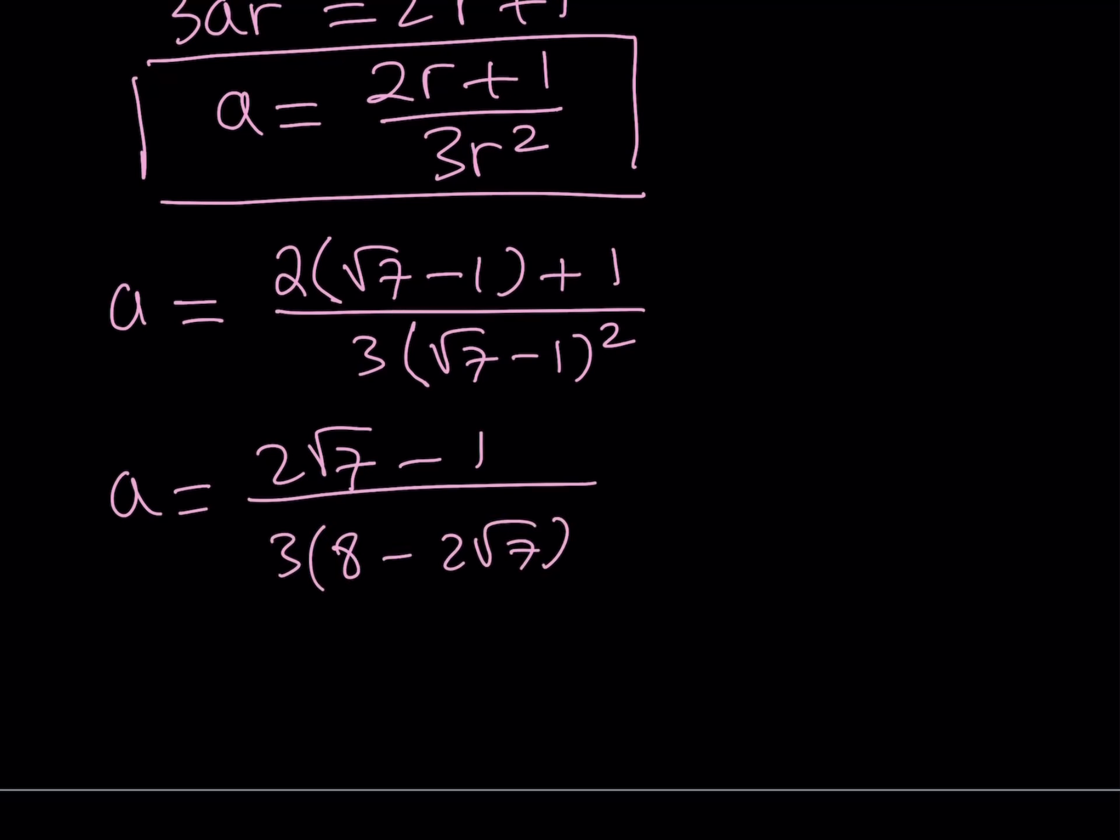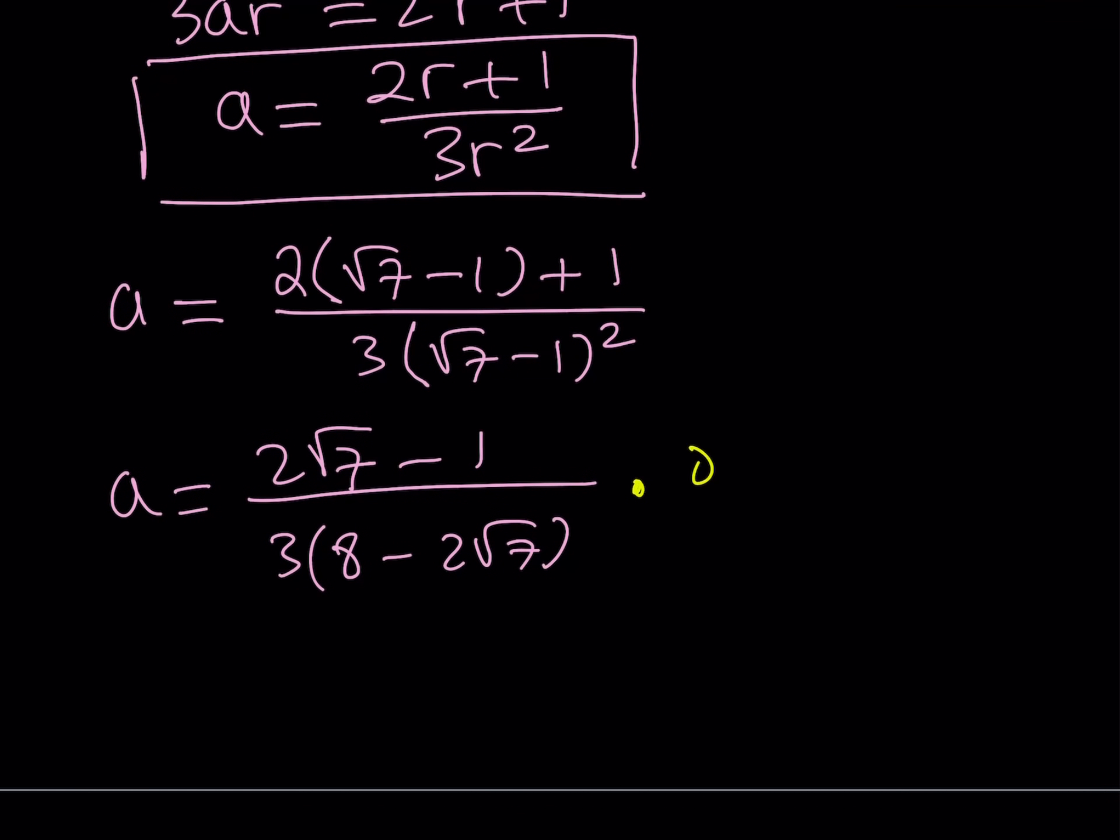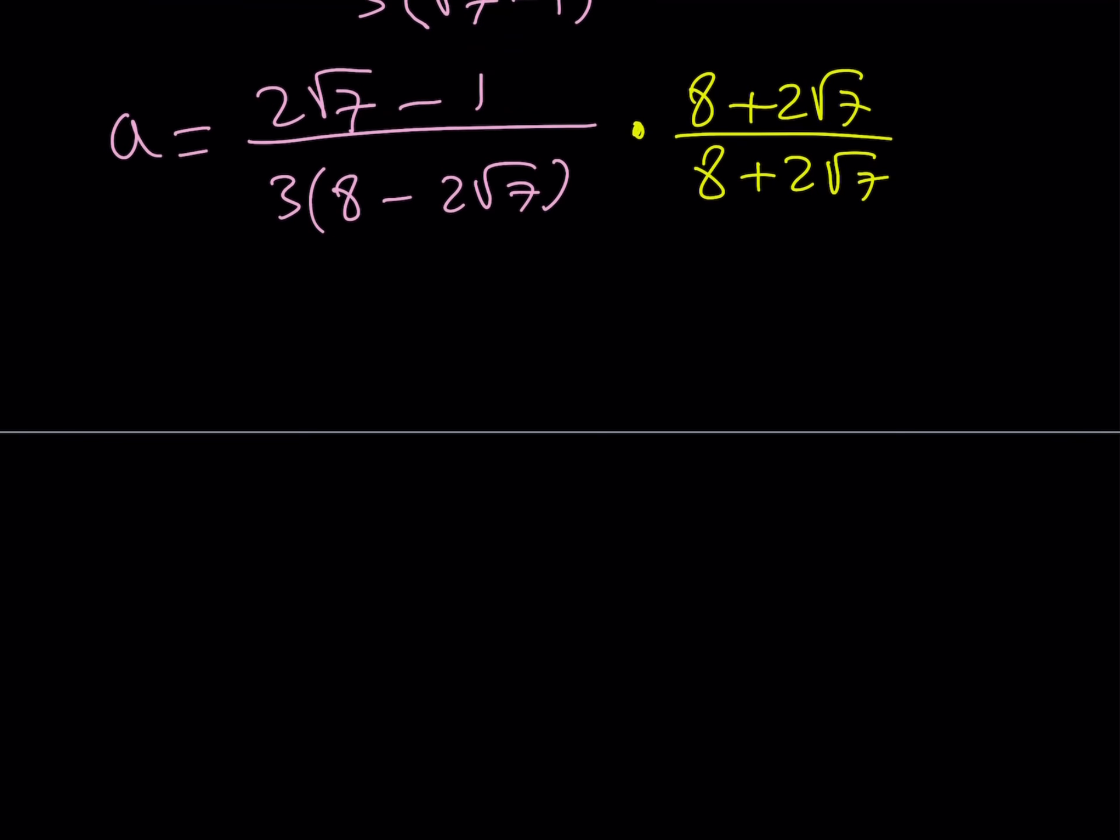And obviously we do need to rationalize denominators. Let's go ahead and multiply by 8 + 2√7 on both the top and the bottom. From here we get something nicer. When you distribute the top you're going to get 2√7 times 8 which is 16√7, and then if you multiply 2√7 by 2√7 that's going to be 4 times 7 which is 28, minus 8 minus 2√7.